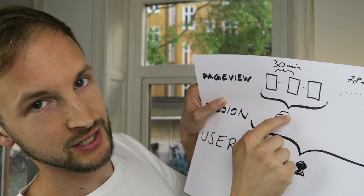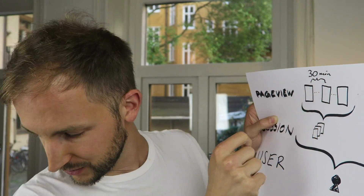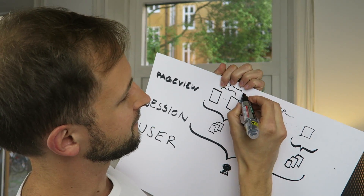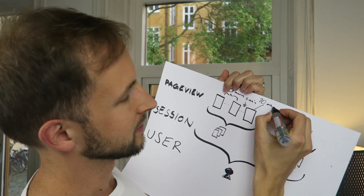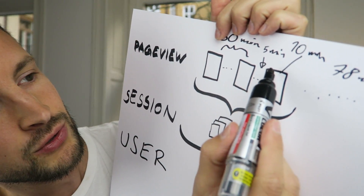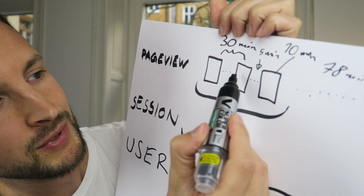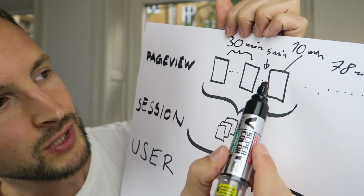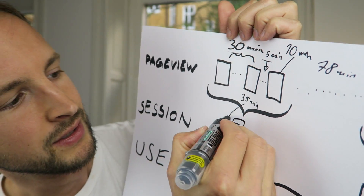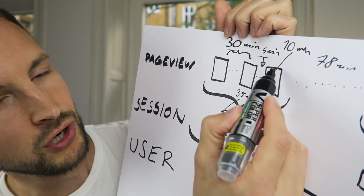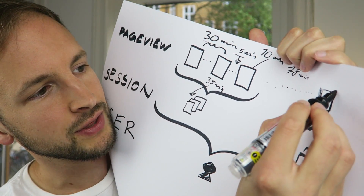Pages per session is pretty intuitive: one two three pages in this session, and one page in another session. Session duration is a bit tricky. If it was 30 minutes between the first and second page view, and then five minutes between the second and third, and then on the final page you stayed for 10 minutes — the problem is that Google Analytics doesn't know you stayed for 10 minutes on that last page. It only knows the time between page views: 30 minutes plus 5 minutes equals 35 minutes for the session.